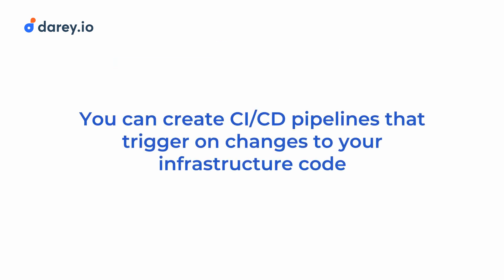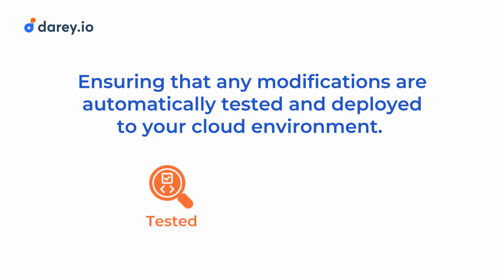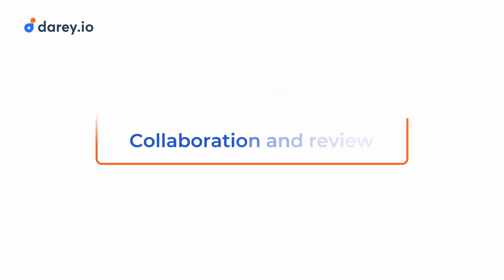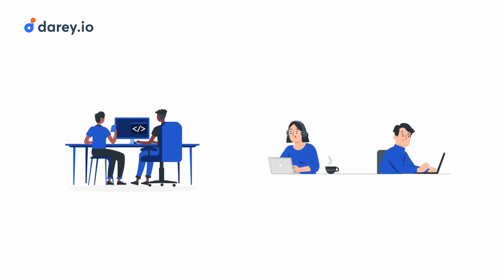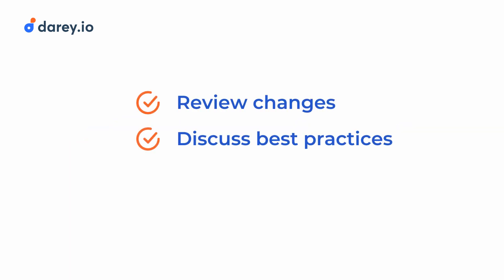Using CI/CD pipelines for infrastructure as code, you can create pipelines that trigger on changes to your infrastructure code, ensuring that any modifications are automatically tested and deployed to your cloud environment. This allows you to catch errors early and maintain a reliable infrastructure setup. By using a VCS for infrastructure as code, we can enable collaboration between developers and operations teams, making it easier to review changes, discuss best practices and share responsibility for maintaining the infrastructure.